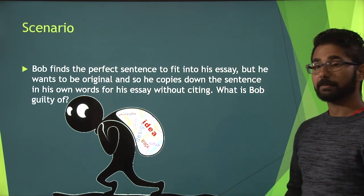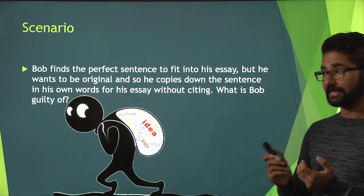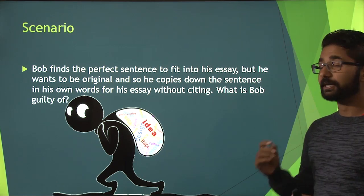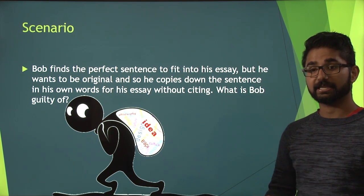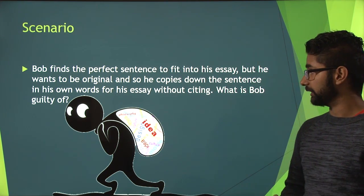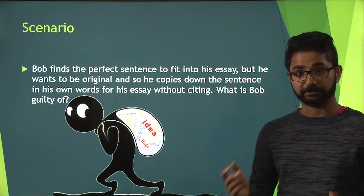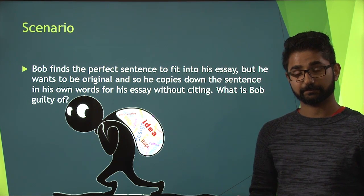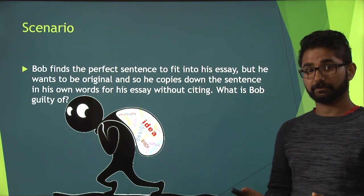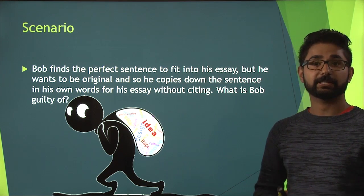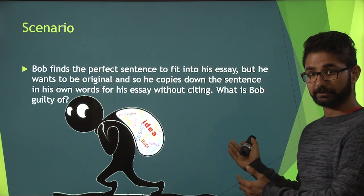To start off, Bob finds the perfect sentence to fit into his essay but he wants to be original. So he copies down the sentence in his own words for his essay without citing. What is Bob guilty of? Well, Bob is guilty of plagiarism, because he doesn't provide a citation for the sentence that he took.